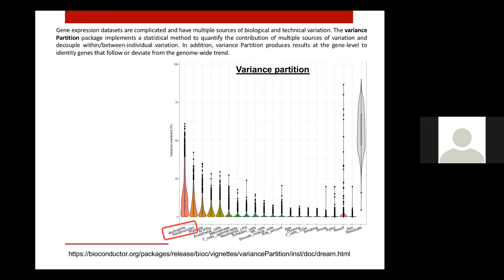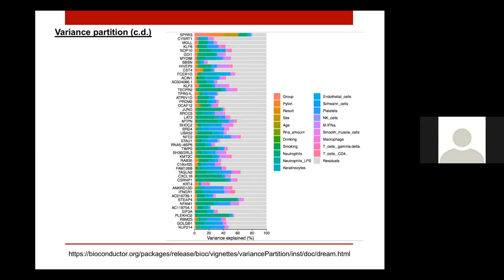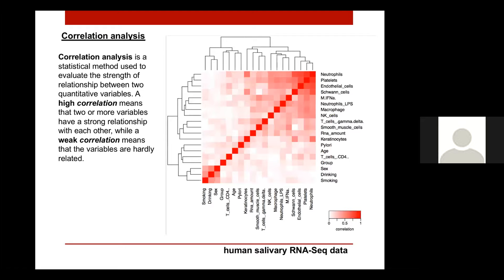The violin plot shows all the top genes sorted by group — case versus control, gastric cancer versus control — where the case-control factor has the most variance, while also showing the contribution of other factors to the expression of those specific genes. We additionally ran correlation analysis and found that the group factor correlates with T-cells, and interestingly also with age and H. pylori infection, suggesting that as we get older we may have more severe H. pylori infection.